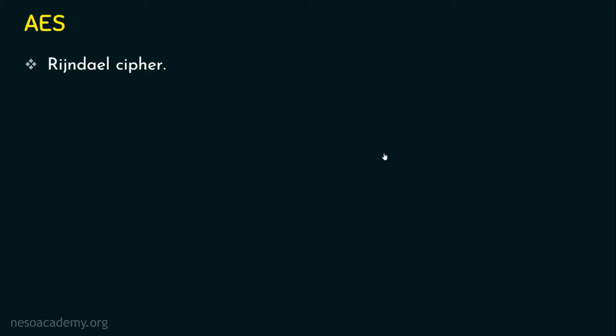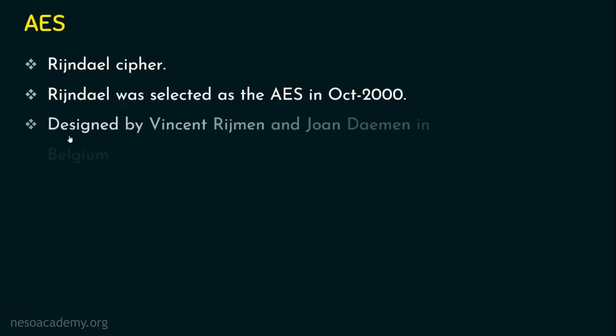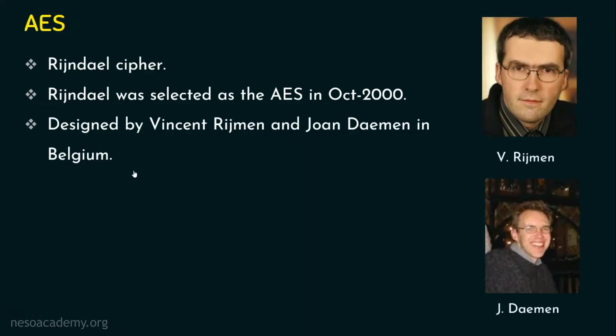In this AES competition, the Rijndael cipher was the winner, and it was named the Advanced Encryption Standard — AES. The Rijndael cipher was selected as the Advanced Encryption Standard in October 2000. AES was designed by Vincent Rijmen and Joan Daemen in Belgium. These two gentlemen developed this AES algorithm, also known as the Rijndael cipher.